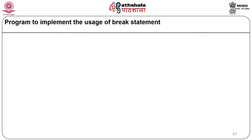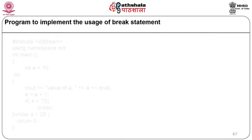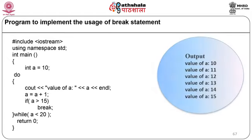A break statement program: integer a = 10; do { cout << 'value of a:' << a; a = a + 1; if (a > 15) break; } while (a < 20); return 0. When compiled and executed, it displays: value of a is 10, 11, 12, 13, 14, 15 — then the break exits the loop.